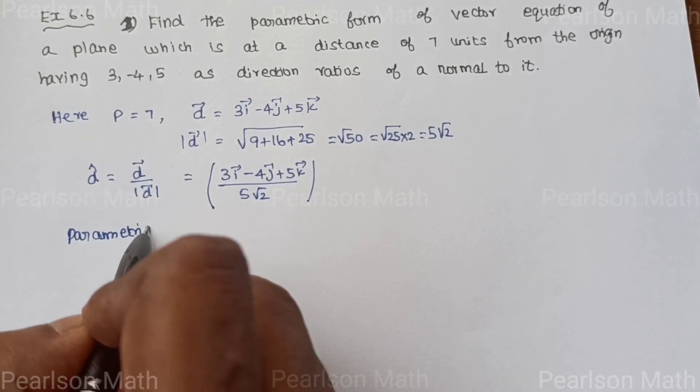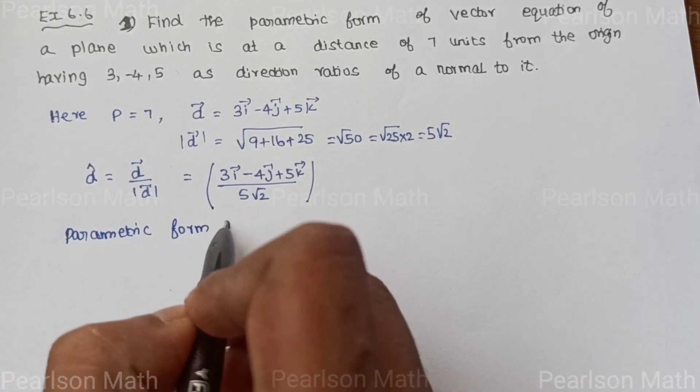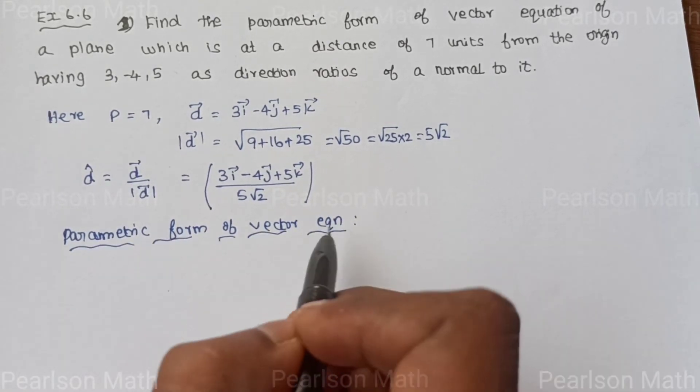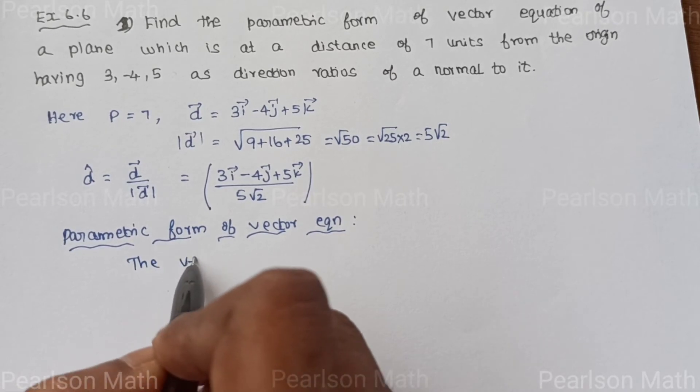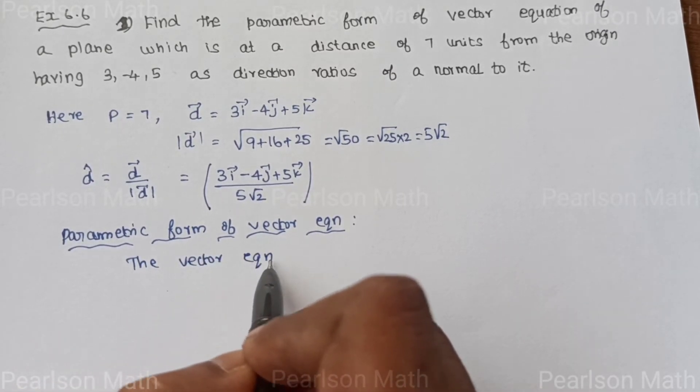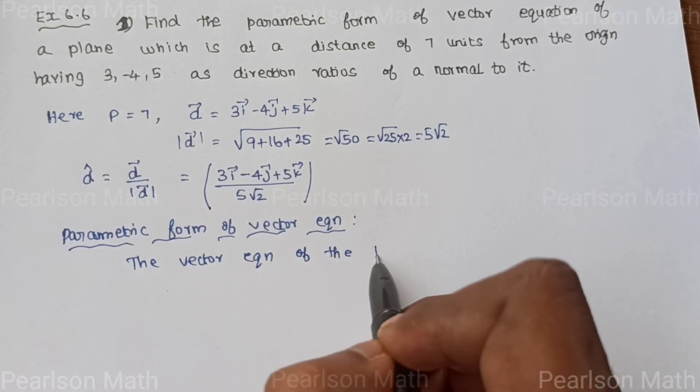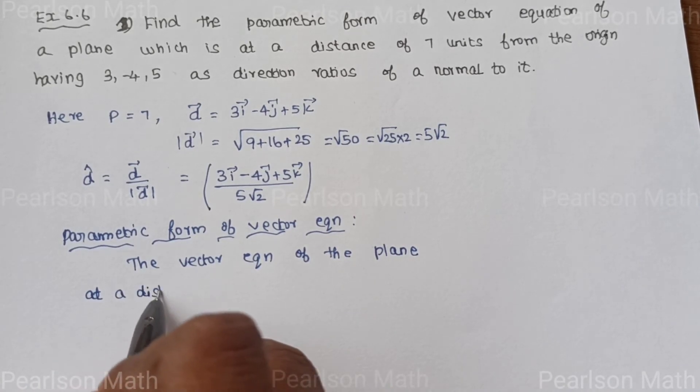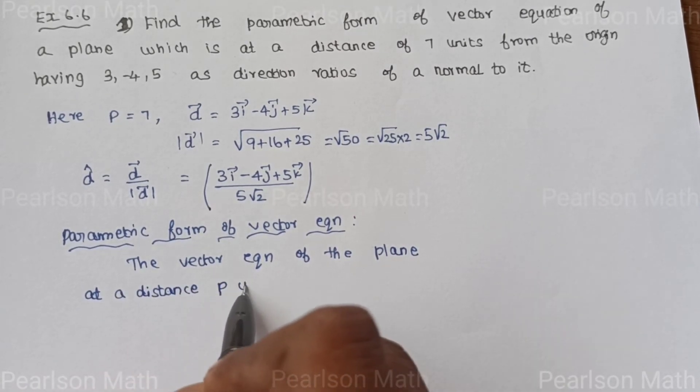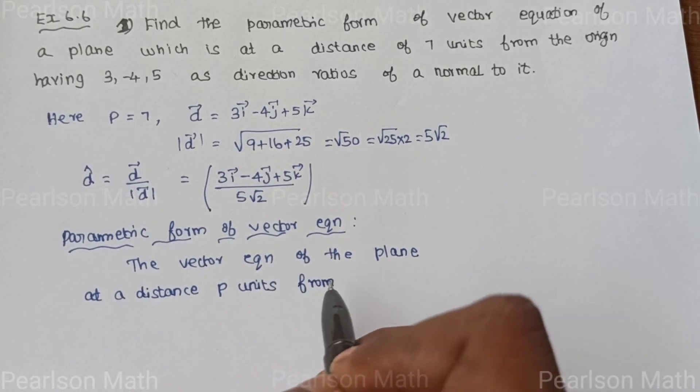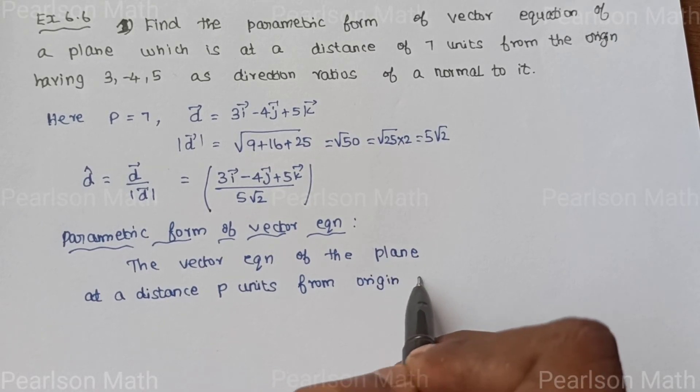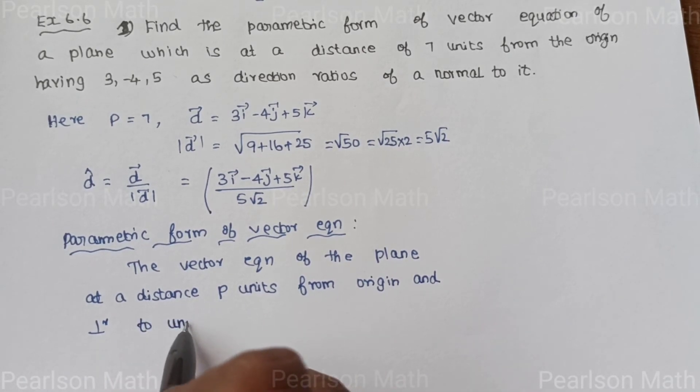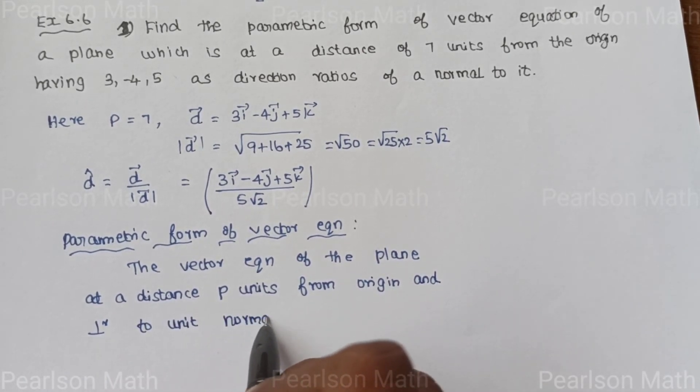Parametric form formula: the vector equation of a plane which is at distance P units from origin and perpendicular to the unit normal vector.